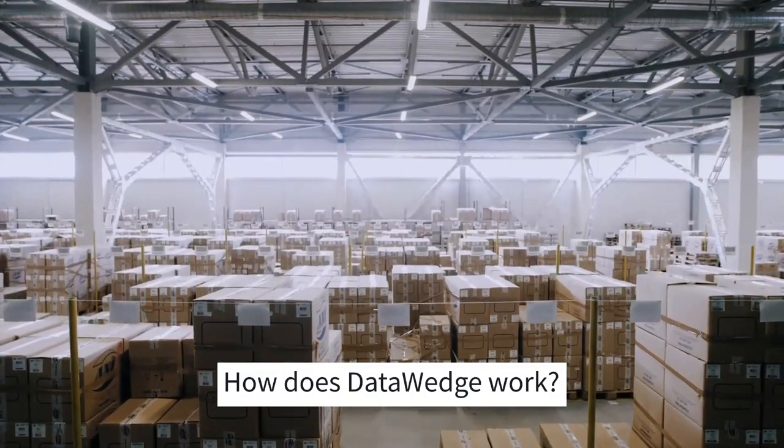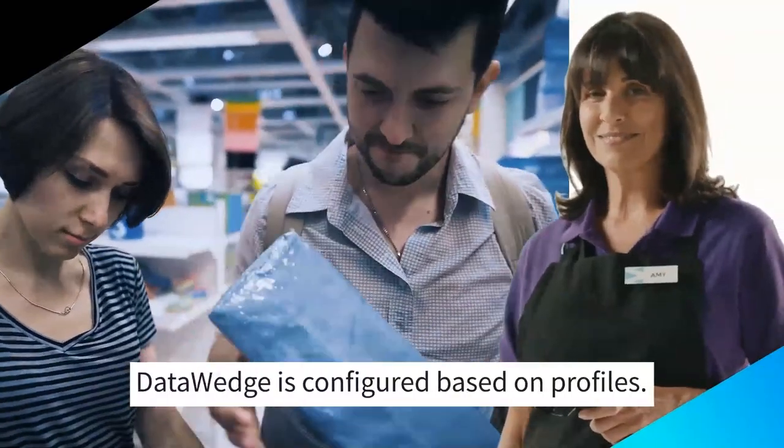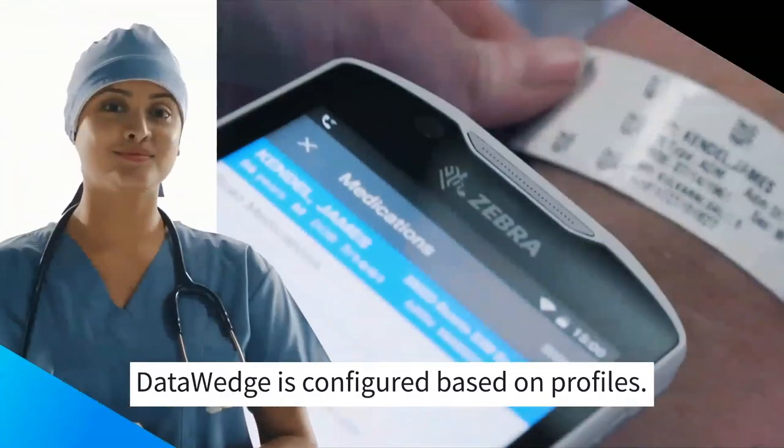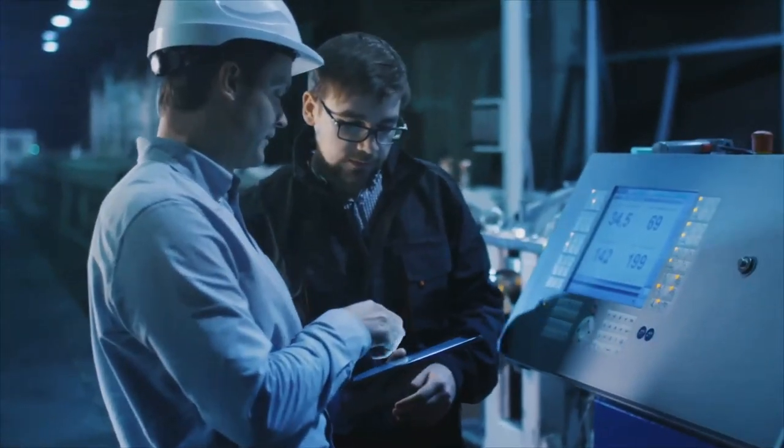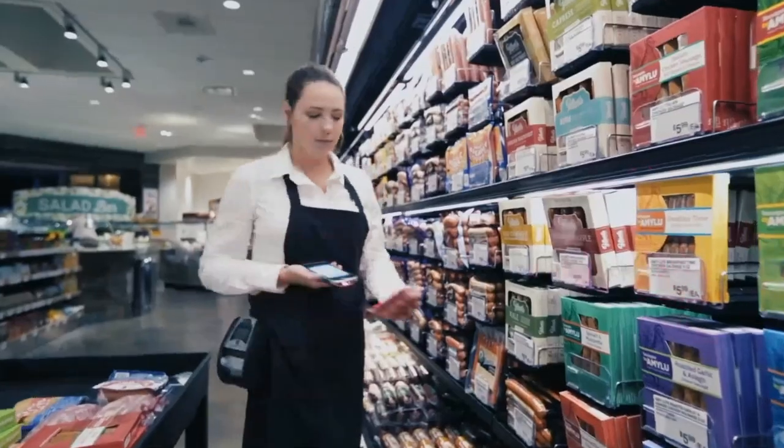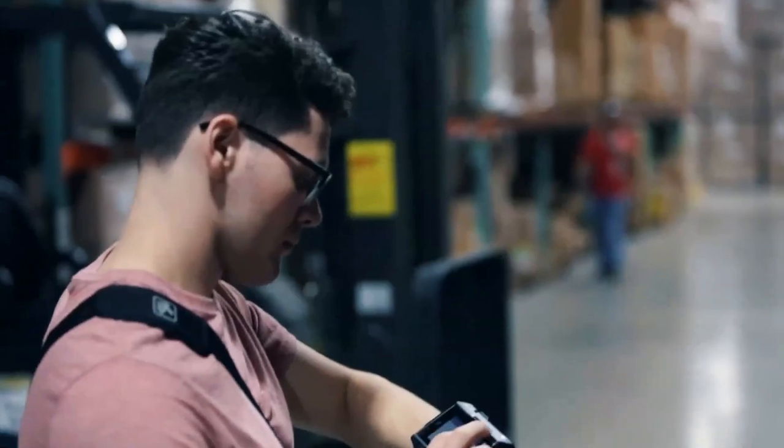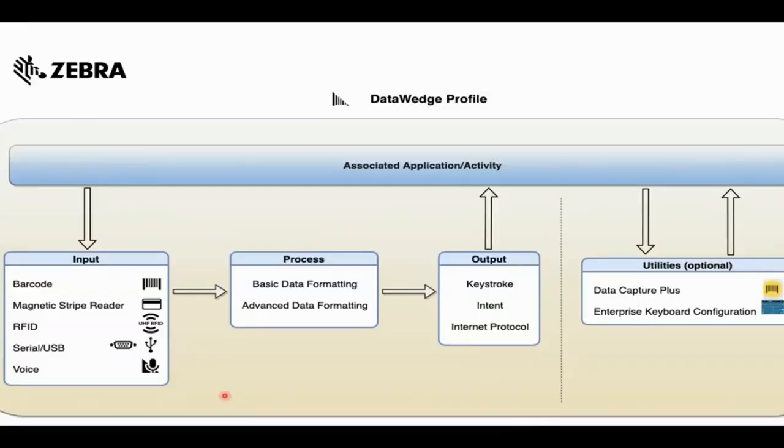DataWedge is configured based on profiles which contain settings that determine how to acquire, process, and dispatch acquired data to an app based on the foreground activity. A profile consists of four main components.